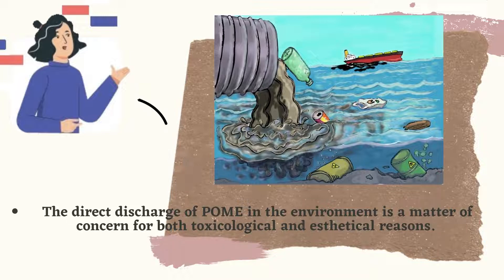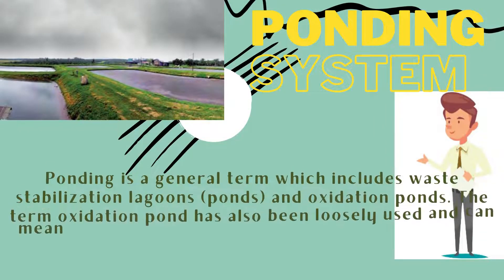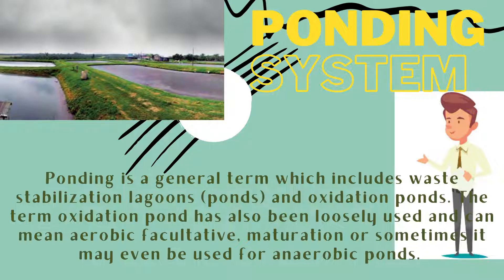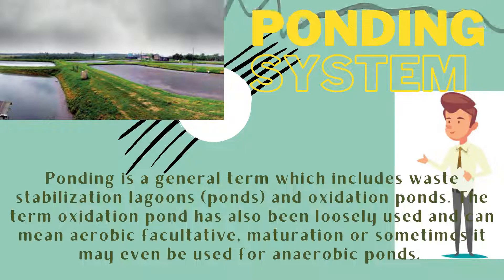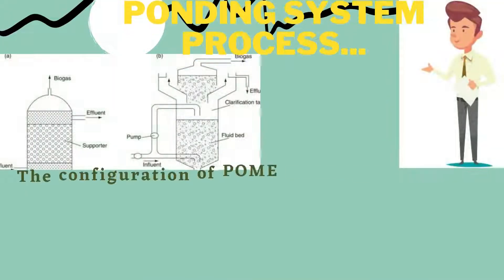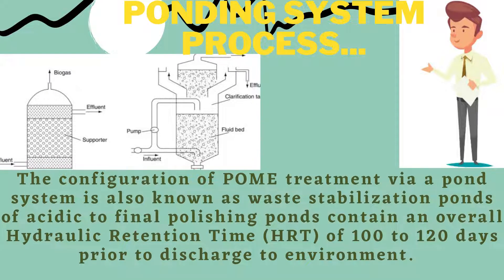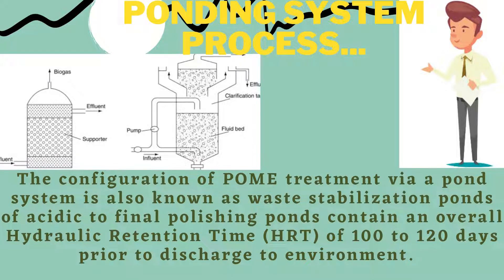There are four major treatment systems in palm to be discussed. Ponding is a general term which includes waste stabilization lagoons and oxidation ponds. The term oxidation pond is also loosely used and can be aerobic, facultative, maturation, or sometimes even used for anaerobic ponds. The configuration of palm treatment via ponding system, also known as stabilization of acidic to final polishing ponds, contains an overall hydraulic retention time of 100 to 120 days prior to discharge to the environment.